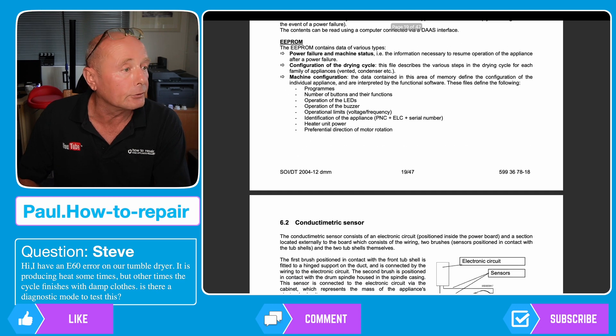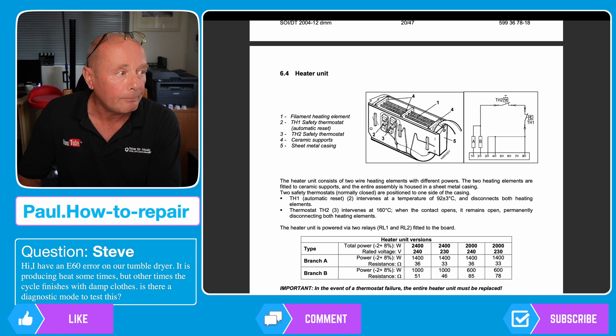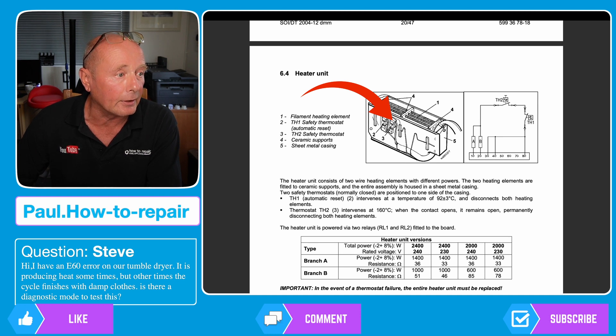Now here we go here is the heater unit and as I said looking from where the wiring goes in on the left hand side the cutout thermostat which is the TH1 safety thermostat which is number two that you can see in the diagram here, so that is preset at 160 degrees. So that thermostat if it ever exceeds 160 degrees this will cut out and stay cut out.